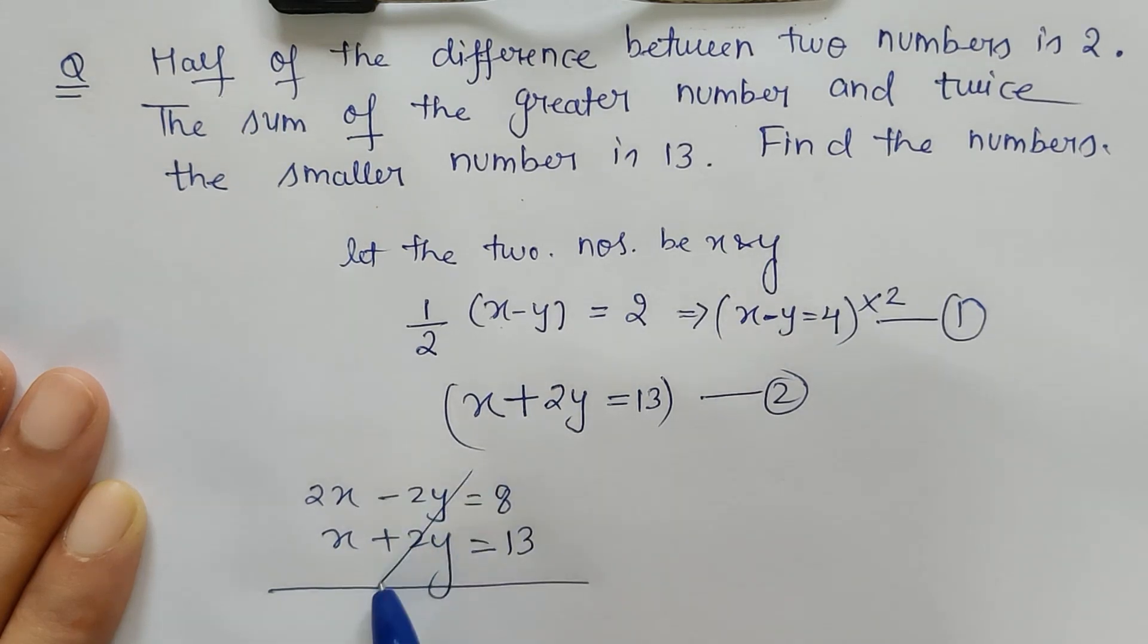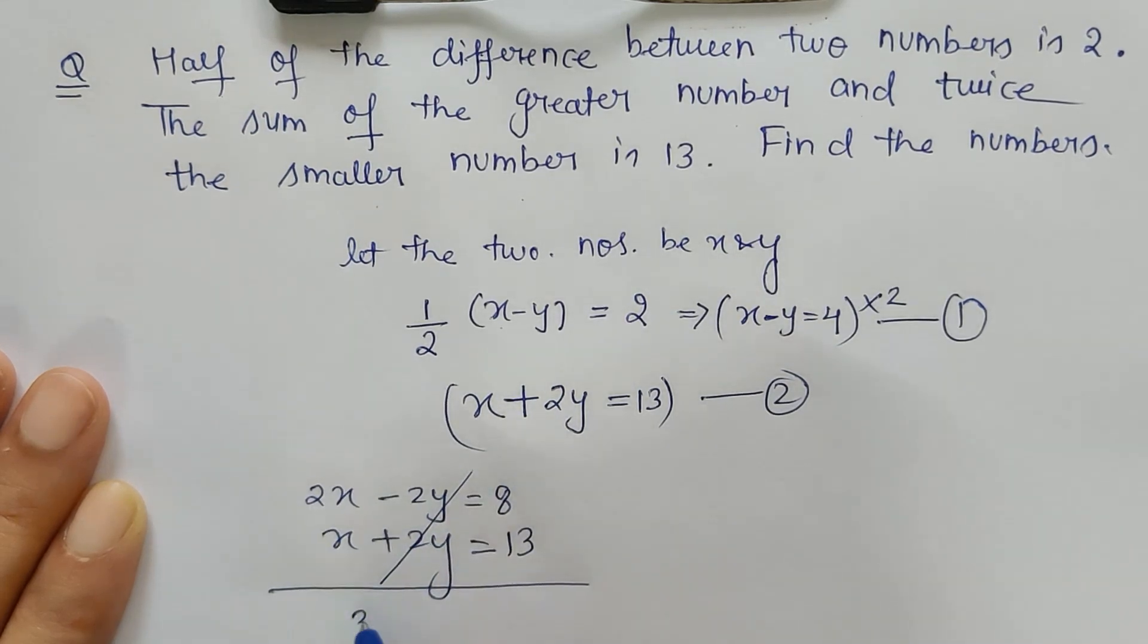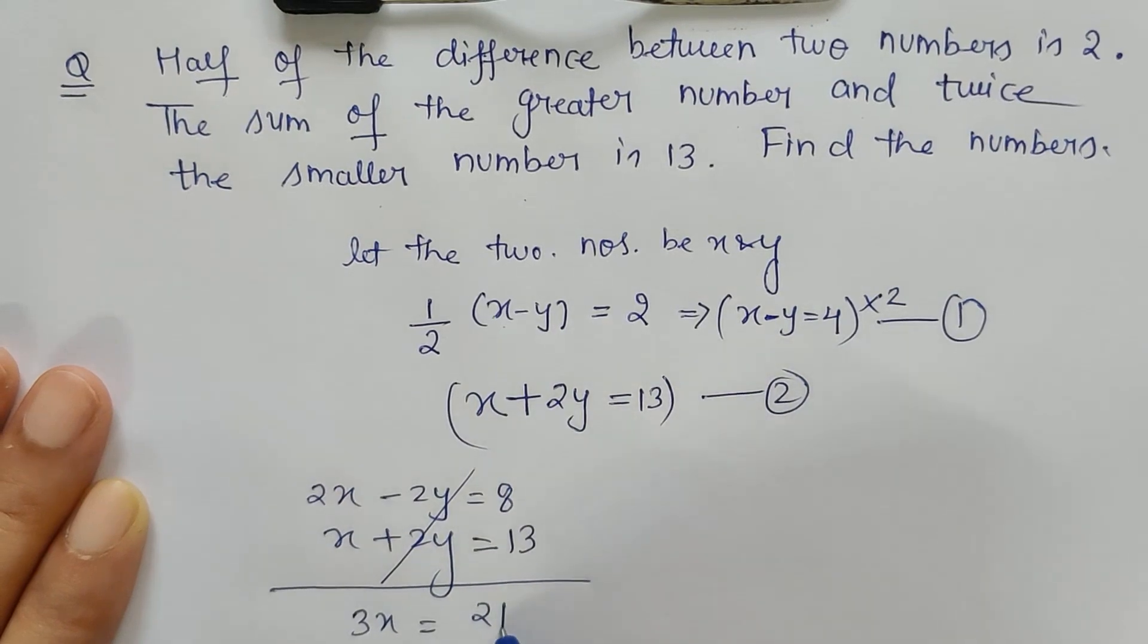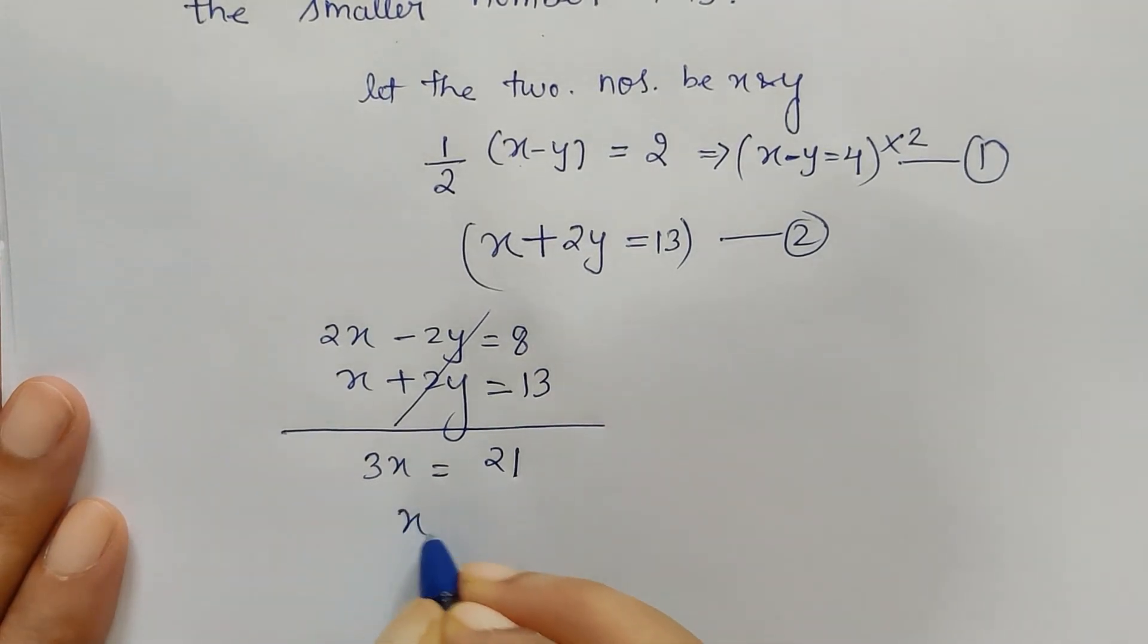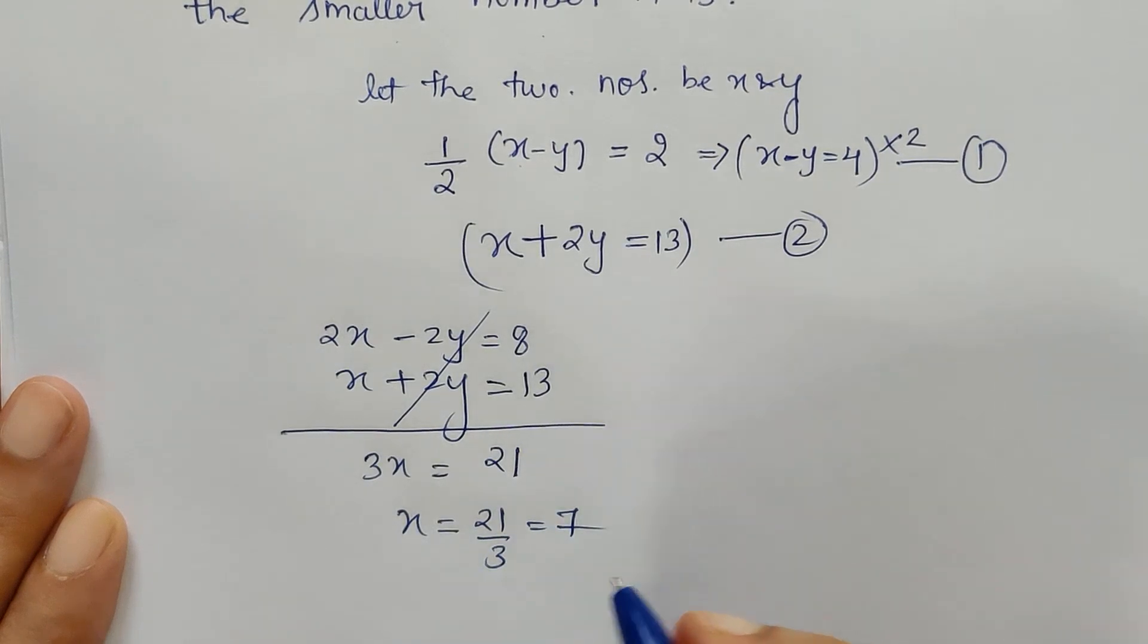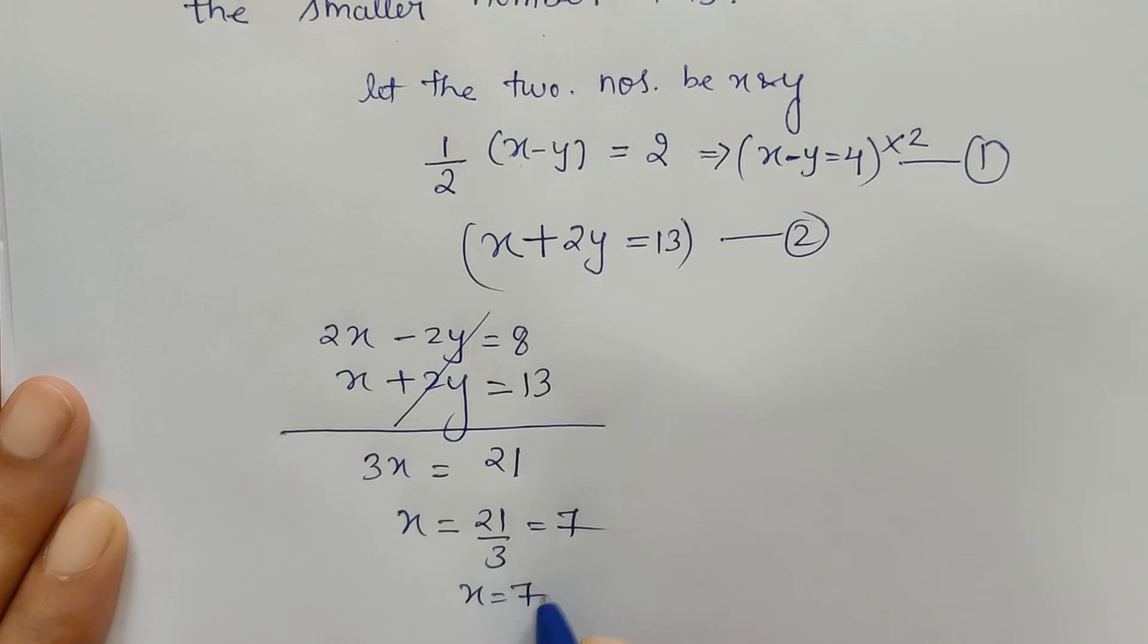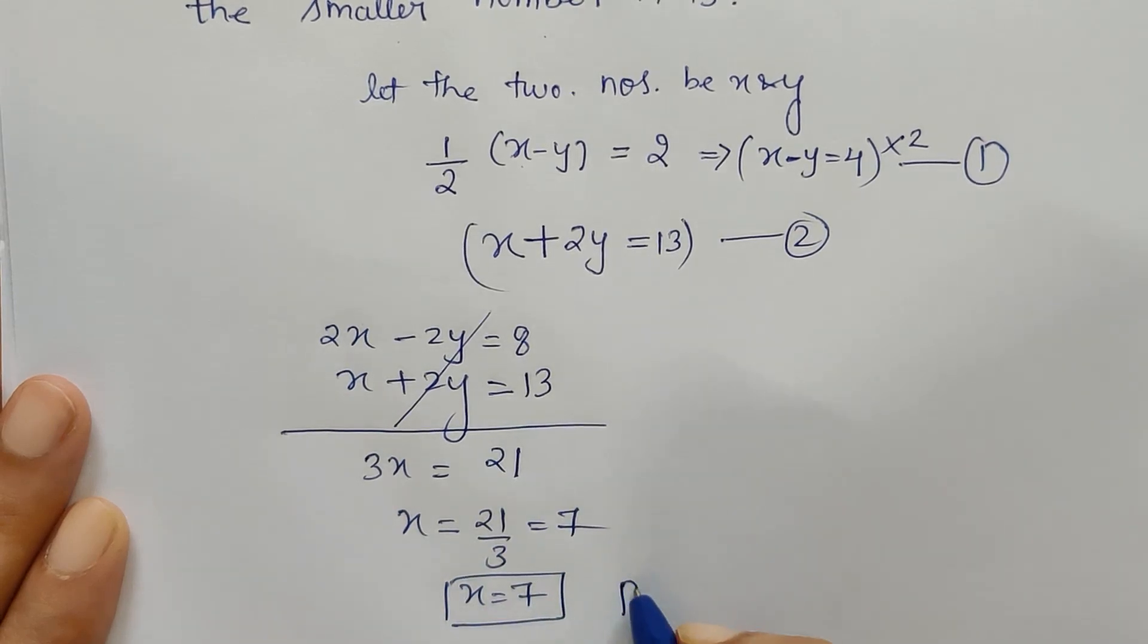So this gets cancelled, and 2x plus x is 3x, and this is 21. On solving it further, we get x is equal to 21 upon 3, which is 7. So the value of x is 7.